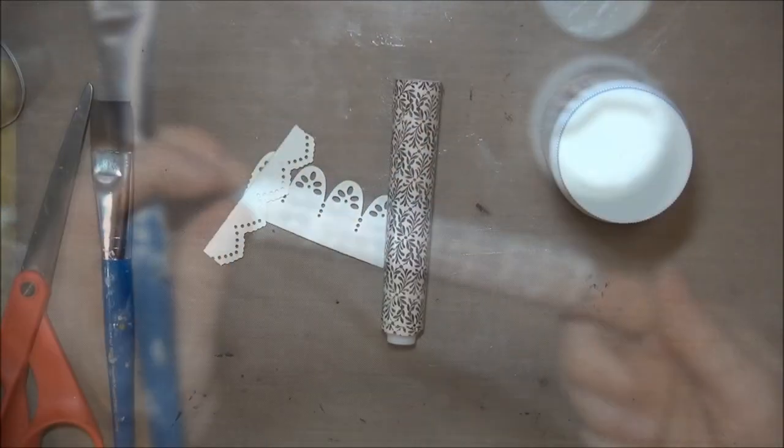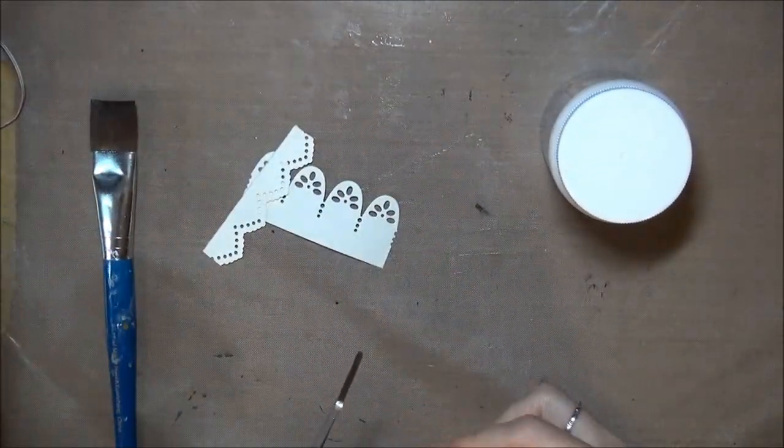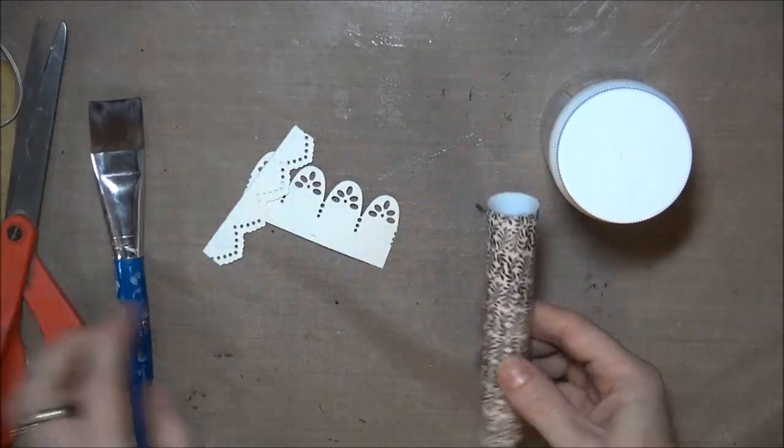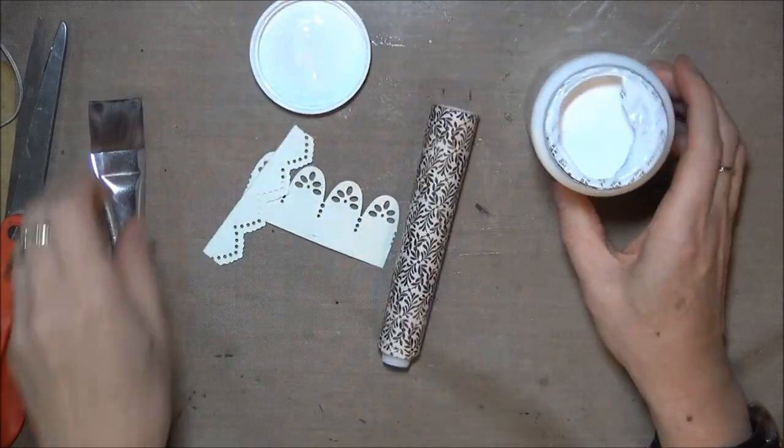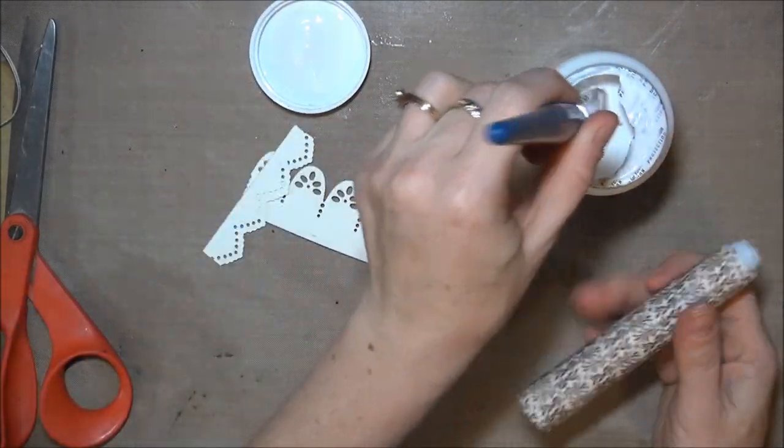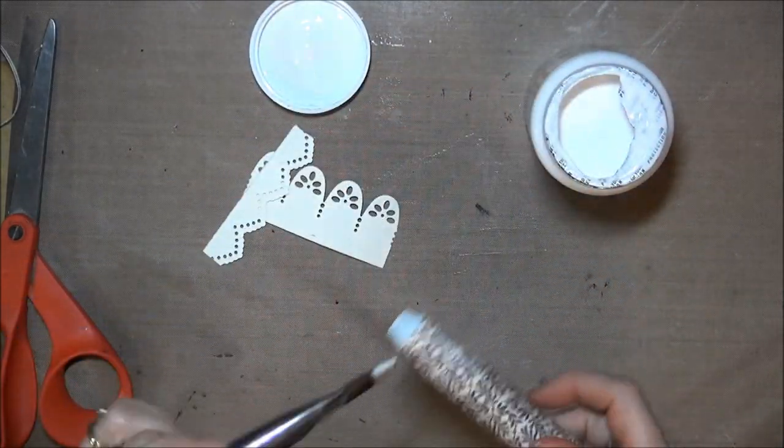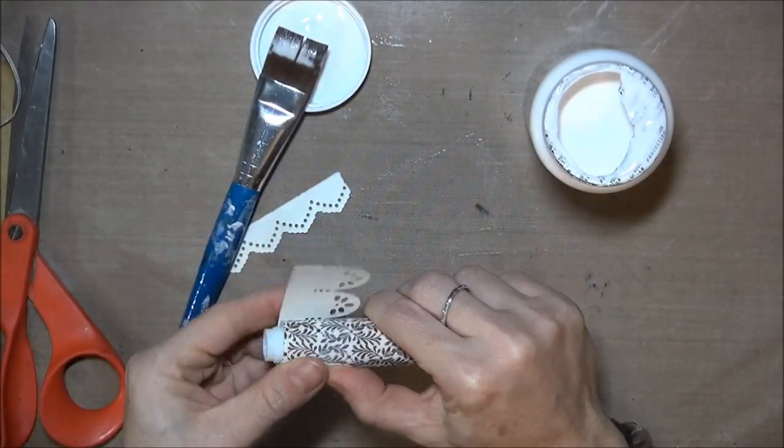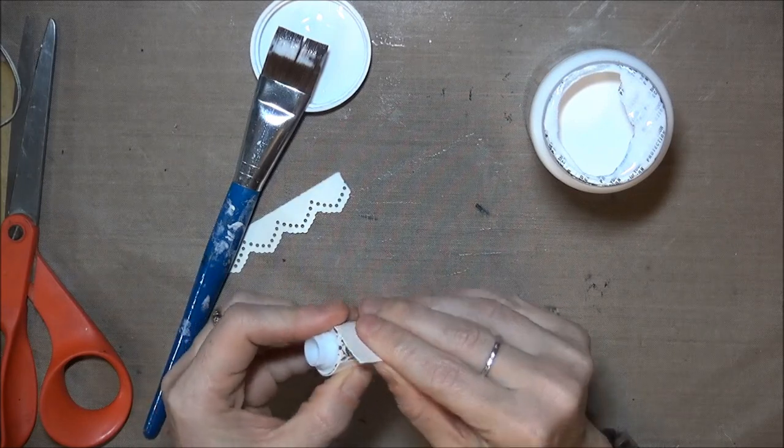I just trimmed the excess paper from the top rim of my candle with my scissors, and then I added some die cut borders to the top and bottom of the candlestick using Mod Podge again. You could use punches to create these borders, or you could leave off the borders and use some other kind of trim, like lace or cording if you wanted to. Completely up to you how you want to decorate your candle.